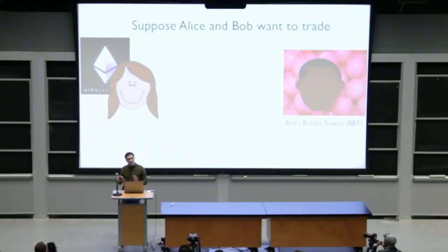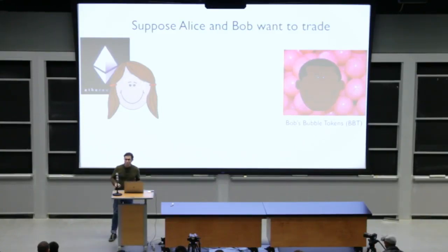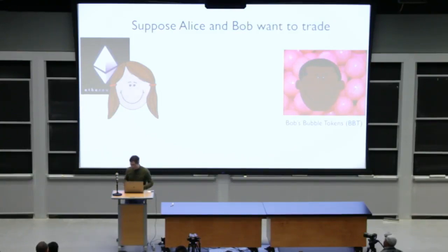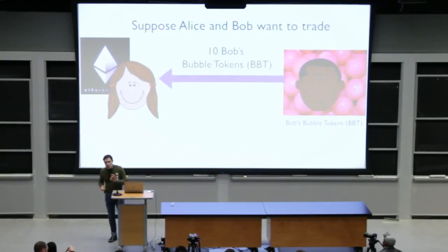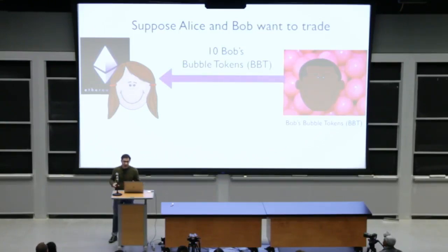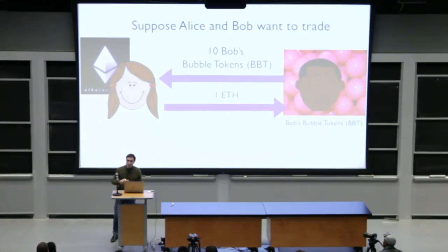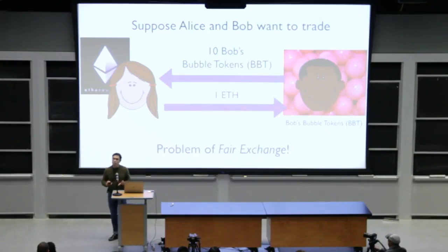To start off with, imagine that Alice and Bob want to perform a transaction together. Bob has a new token — we'll call it Bob's Bubble Token — that he'd like to sell to Alice for Ether, and Alice would like to buy some. There's a little problem: if Bob sends the tokens first, he has no guarantee that Alice is going to pay him the Ether. And if Alice sends the Ether first, she has no guarantee she'll actually get the tokens. This is the classic problem of fair exchange that we encounter in many blockchain settings.